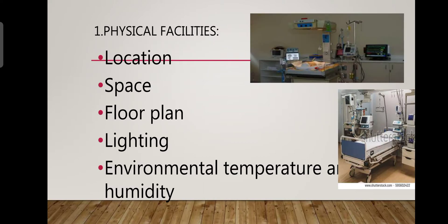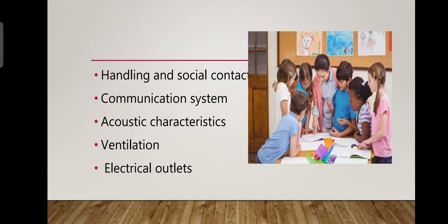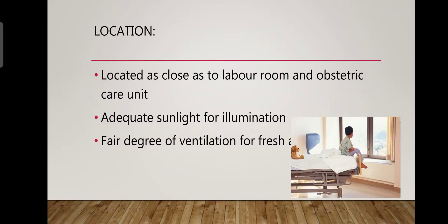Regarding physical facility, the key considerations are location, space, floor planning, lighting, environmental temperature and humidity, handling and social contact, communication system, acoustic characteristics, ventilation, and electrical outlets. The NICU should be located as close as possible to the labor room and obstetric care units, including the operating theatre, so that emergency transfers of babies can be done easily.